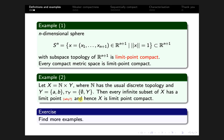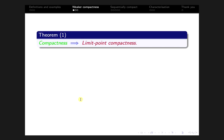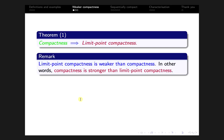Exercise: Find more examples of limit point compact topological spaces. Now we show that compactness implies limit point compactness — that is, if X is a compact topological space then X is limit point compact. So compactness is stronger than limit point compactness, which means limit point compactness is weaker than usual compactness.